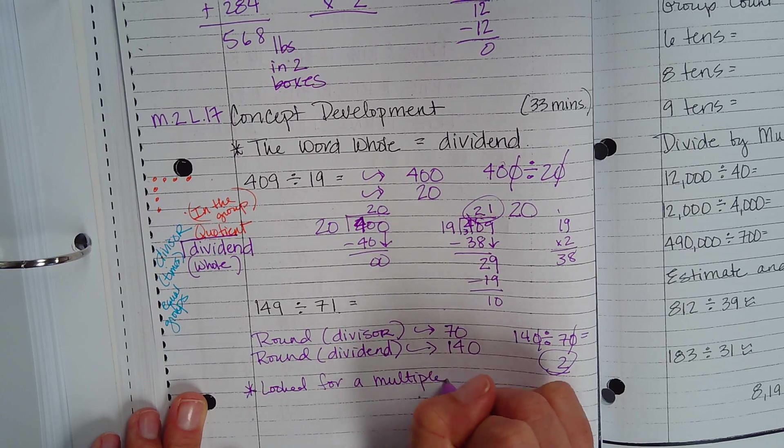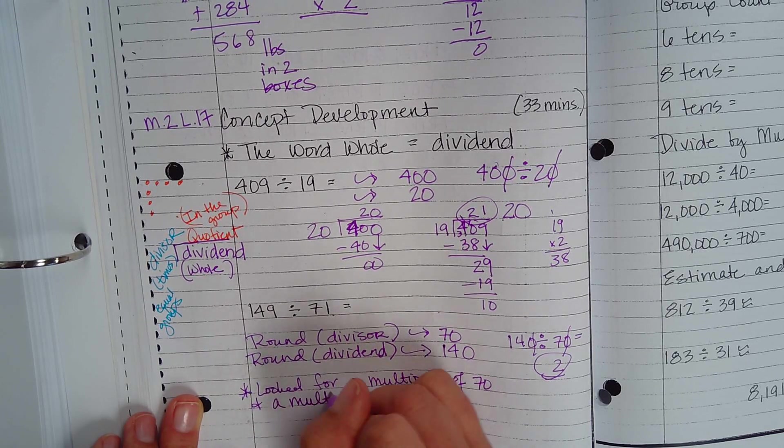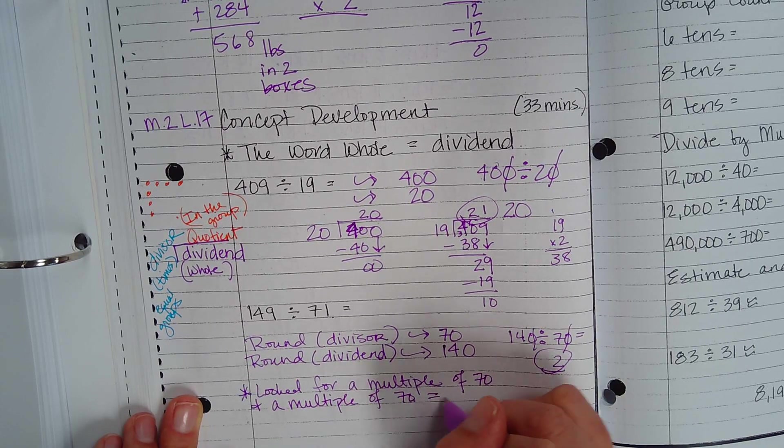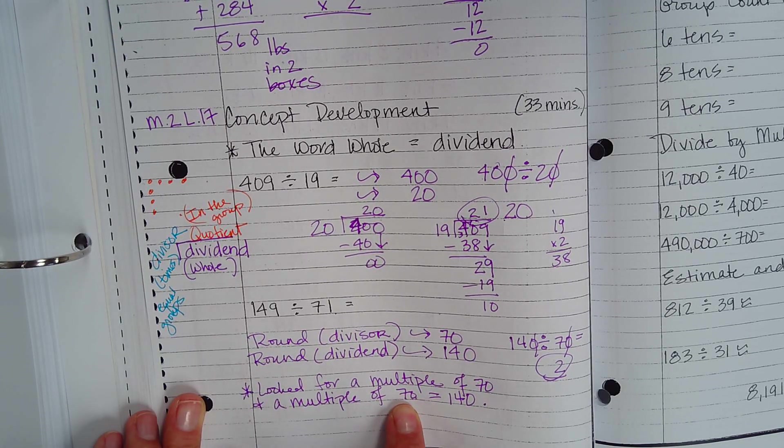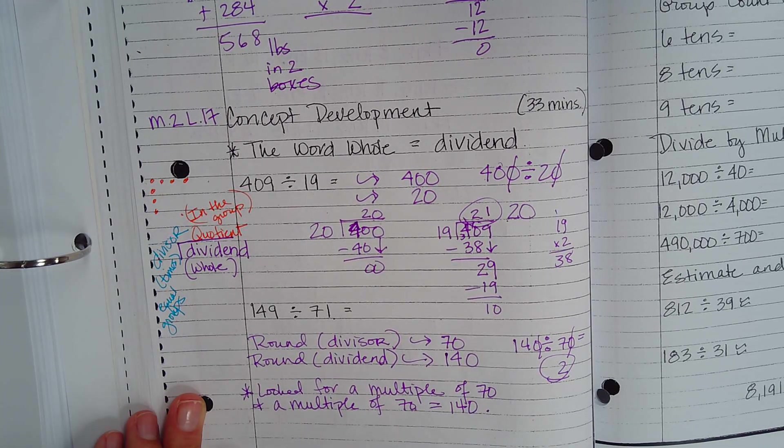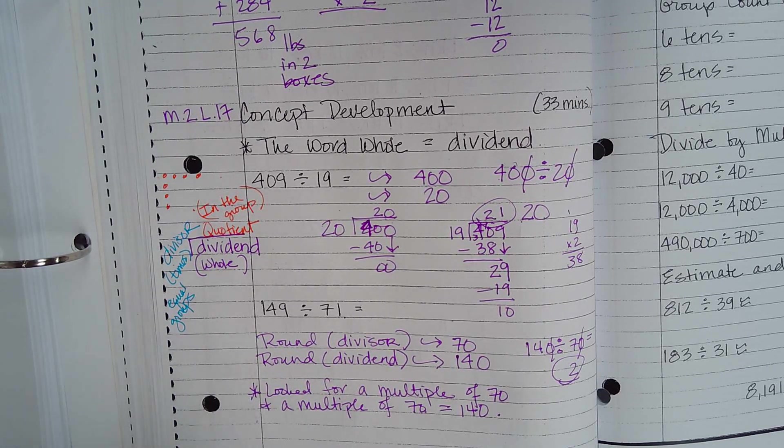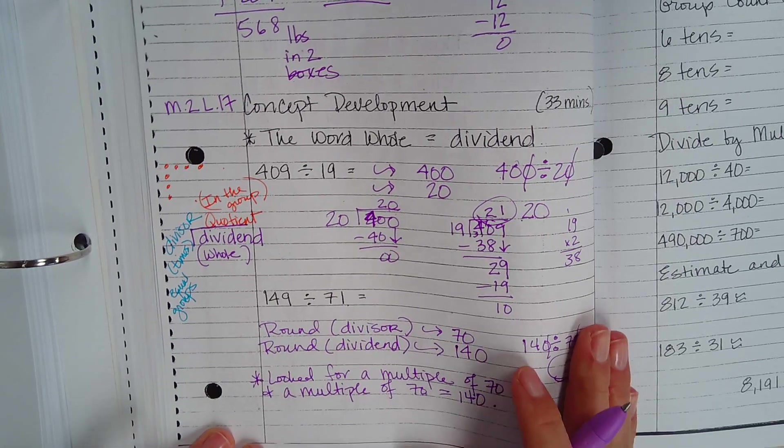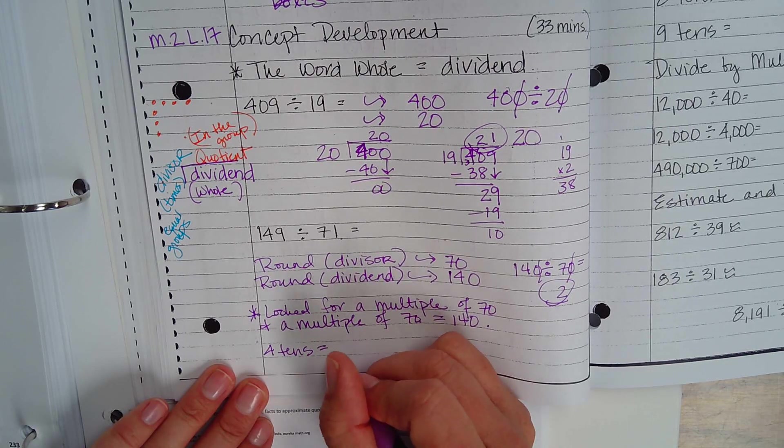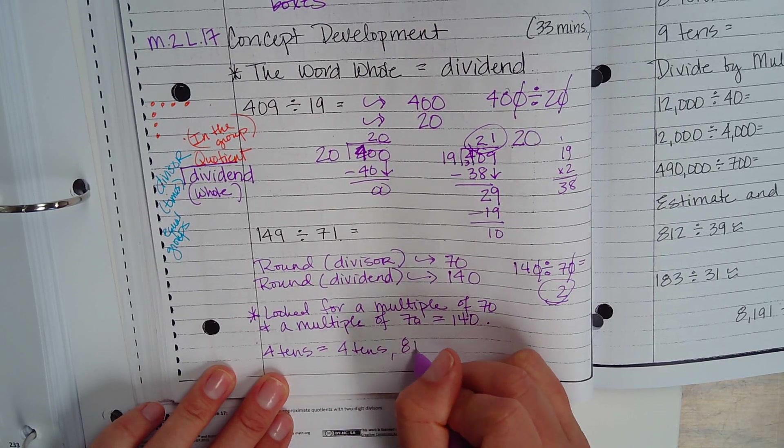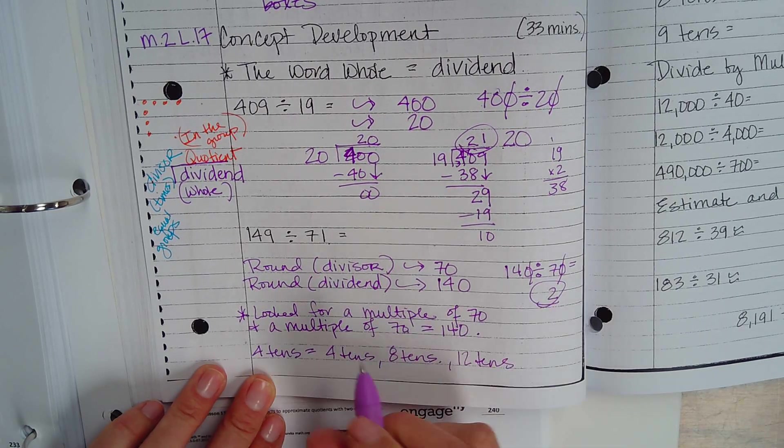Because seven 10s, 14 10s, right? That's where that connection comes. All right. So the closest multiple of 70 is 140. So if we go back to, remember in our fluency how we went like four 10s, right? And then we went four 10s, eight 10s, right? 12 10s. Okay. Well, that's essentially what we did here.